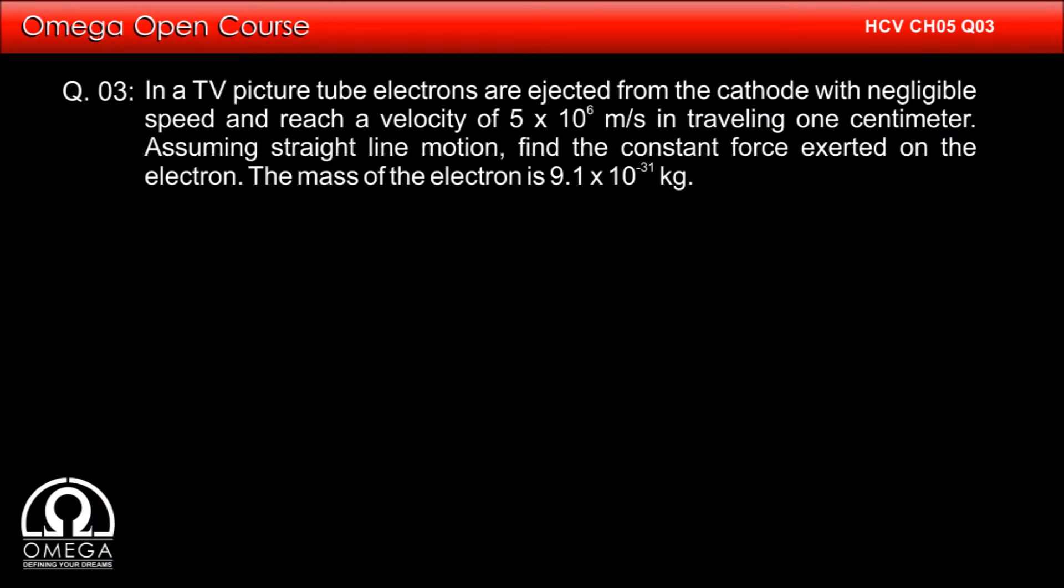In a TV picture tube, electrons are ejected from the cathode with negligible speed and reach a velocity of 5 × 10^6 meters per second in traveling 1 centimeter. Assuming straight line motion, find the constant force exerted on the electron.